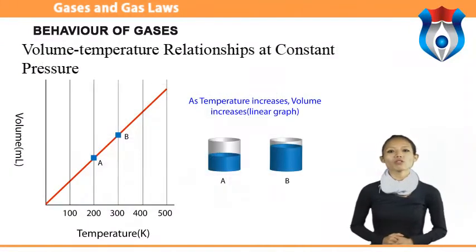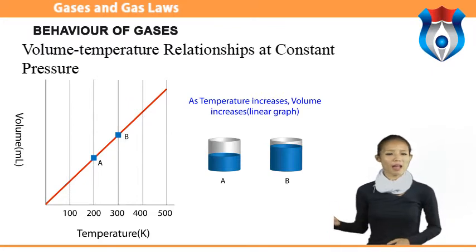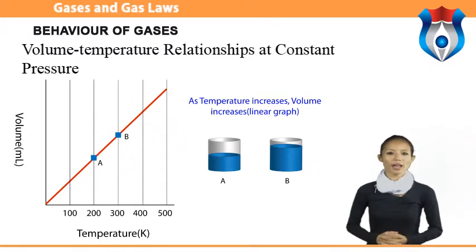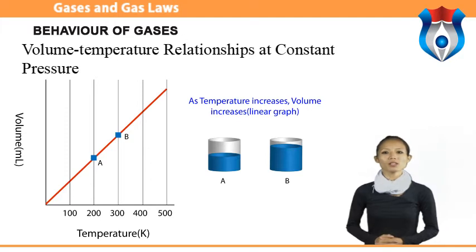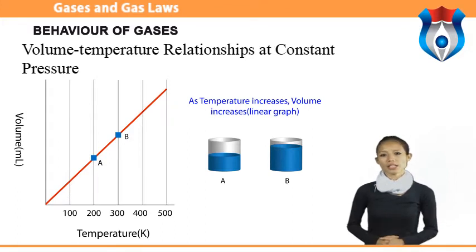Volume-temperature relationship at constant pressure: as the temperature increases, the average kinetic energy and speed of the gas particles increases. In order to maintain a constant pressure, the volume of the container must increase, increasing the distance between gas particles and the walls of the container.